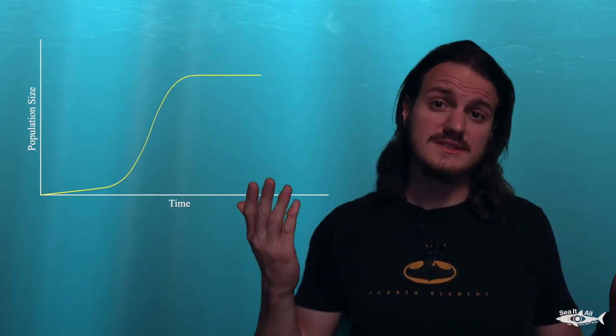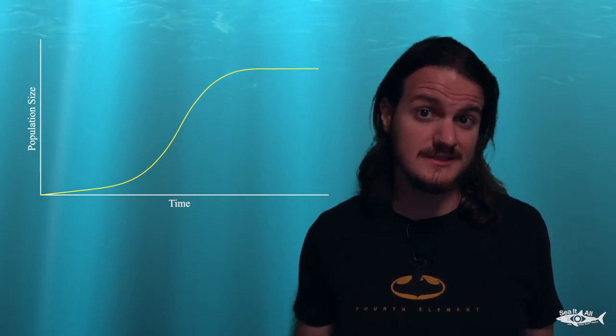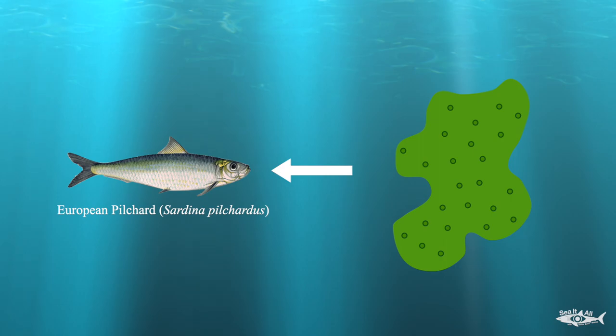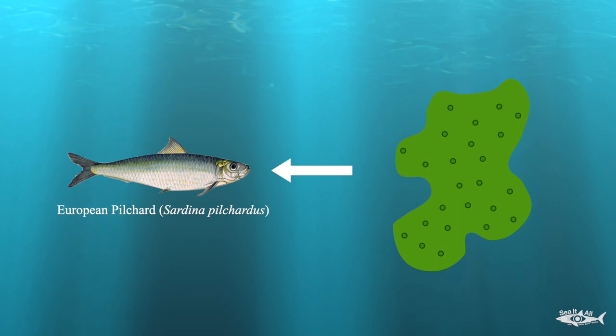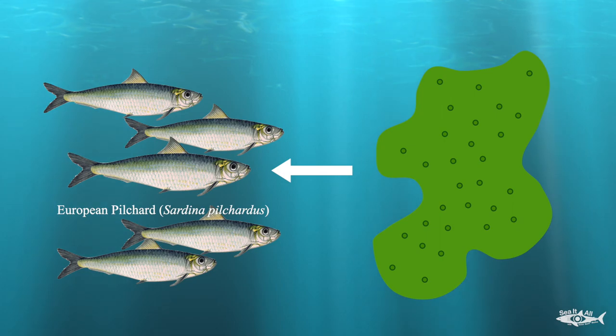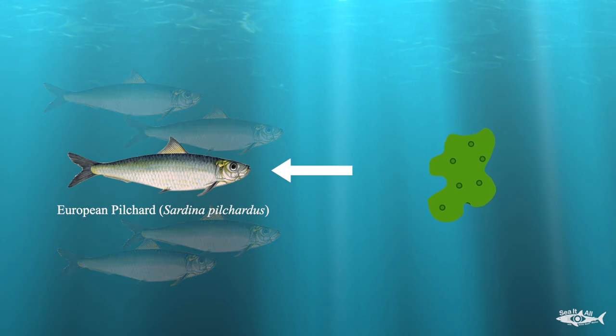This may all seem fairly straightforward, but there's something that makes it more complicated. Ecosystems are dynamic, and both environmental and anthropogenic factors cause variations in the carrying capacity — meaning this value will keep shifting, increasing and decreasing over time and causing changes in maximal sustainable yield. For instance, take a species of small fish like the European pilchard that feeds on plankton. The carrying capacity of its stock will vary depending on plankton availability and the size and timing of large planktonic blooms. Years with a lot of plankton available may mean a higher carrying capacity, while years with low plankton availability will cause the carrying capacity to be lower.